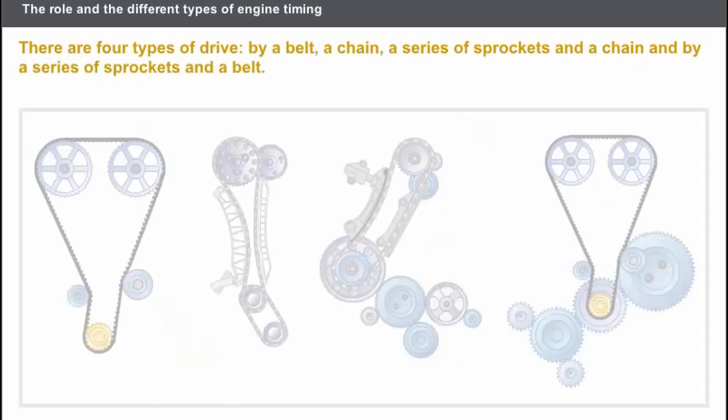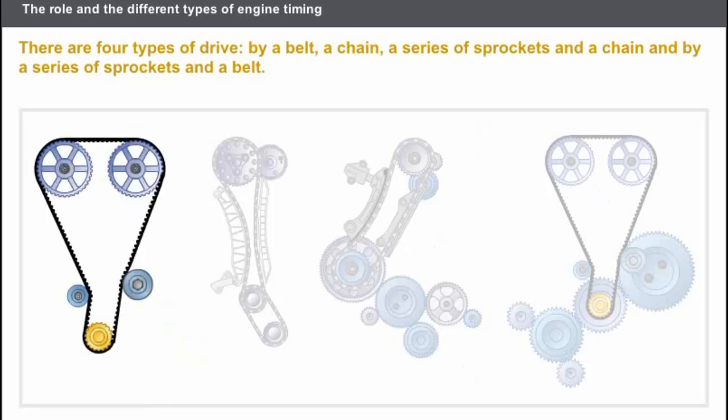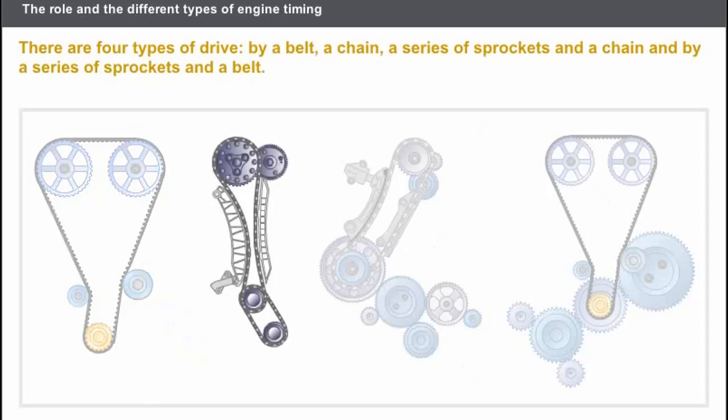The connection between the camshaft and the crankshaft can be made via the following components: a belt, a chain,